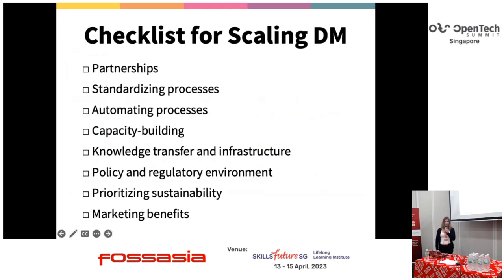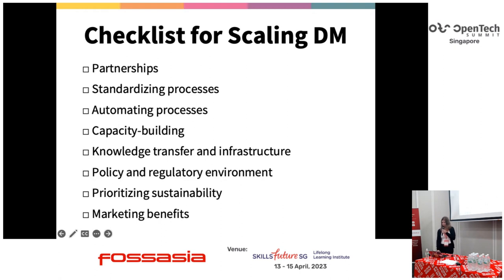We also created a checklist for getting into distributed manufacturing. These are mainly for high-level use, but some enablers may be relevant to anyone wanting to do distributed manufacturing. This is about creating healthy ecosystems for distributed manufacturing. It should include: building partnerships and strong relationships with local communities; standardizing manufacturing processes, especially for distributed manufacturing; and automating manufacturing and administrative processes — automating things you don't need to think about daily will obviously help you scale.